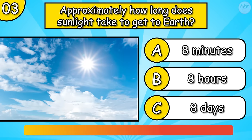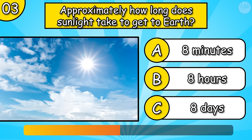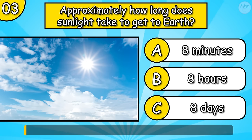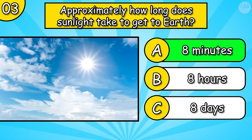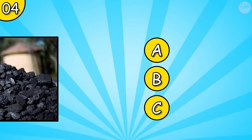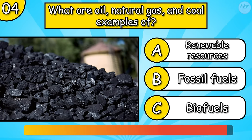Approximately how long does sunlight take to get to Earth? What are oil, natural gas and coal examples of?